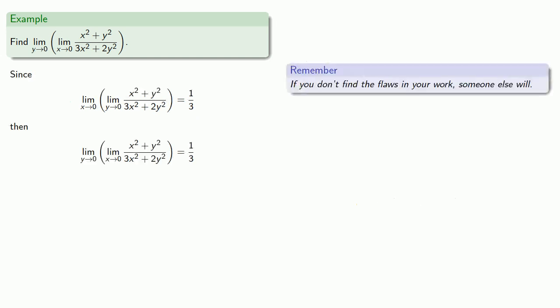Well let's switch the order of the limit. So let's find the limit as y goes to zero of the limit as x goes to zero of the same mess. Well since the limit as x goes to zero of the limit of y goes to zero is one third, then if I switch the limit around it's got to be the same thing right?